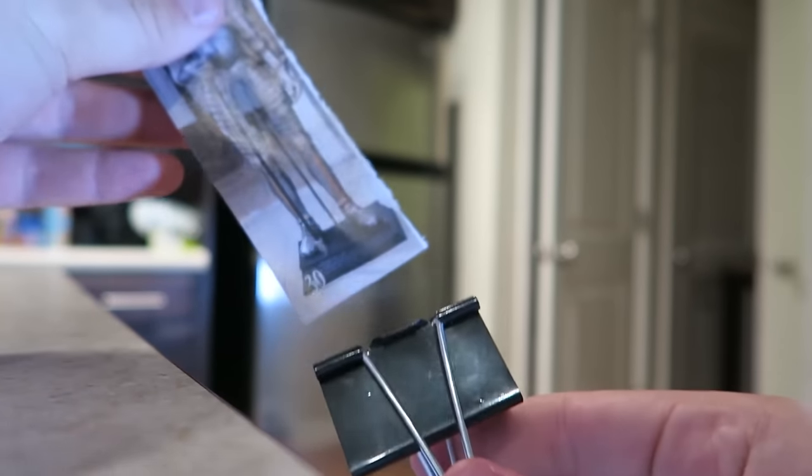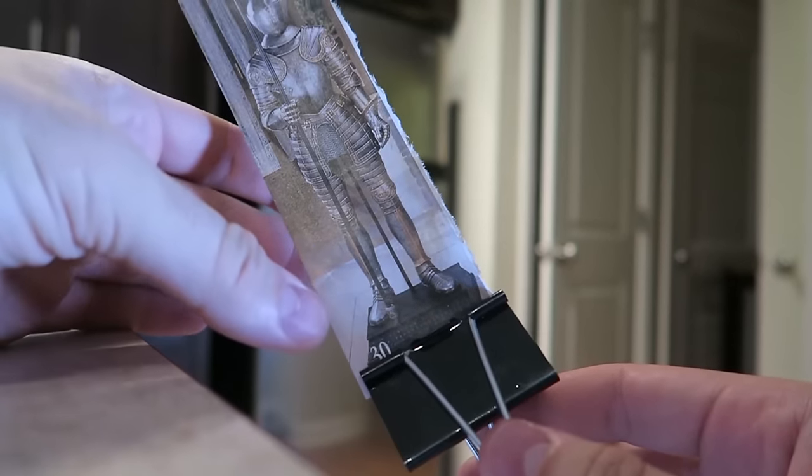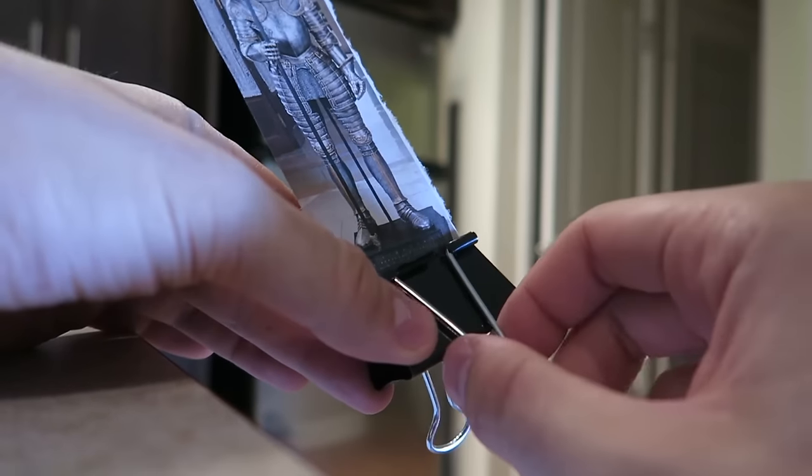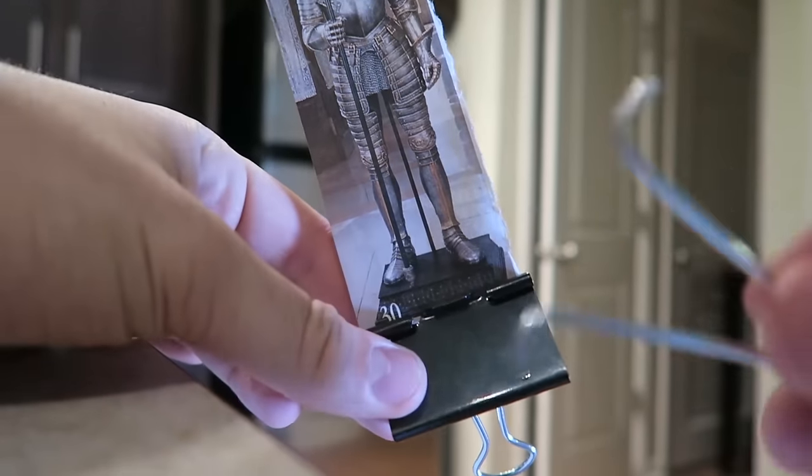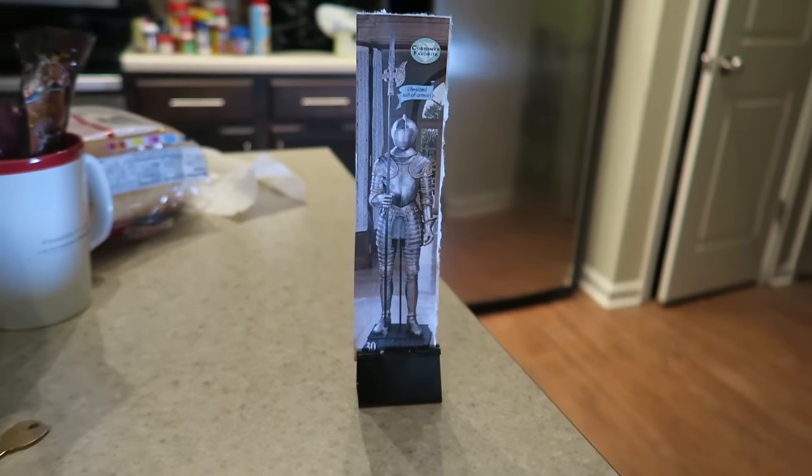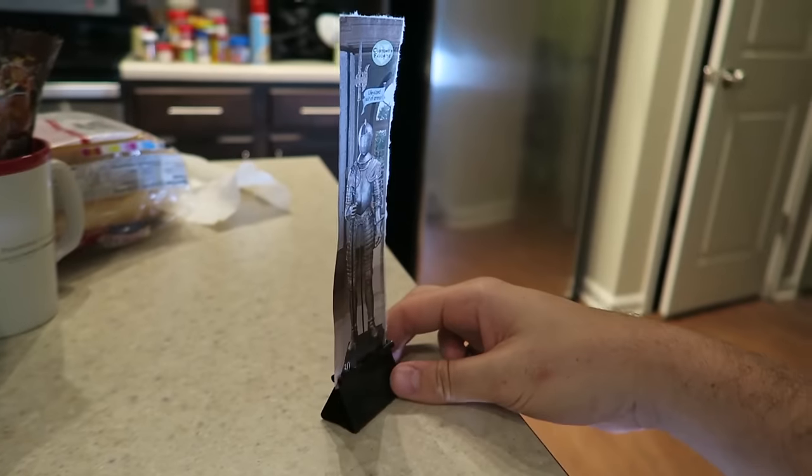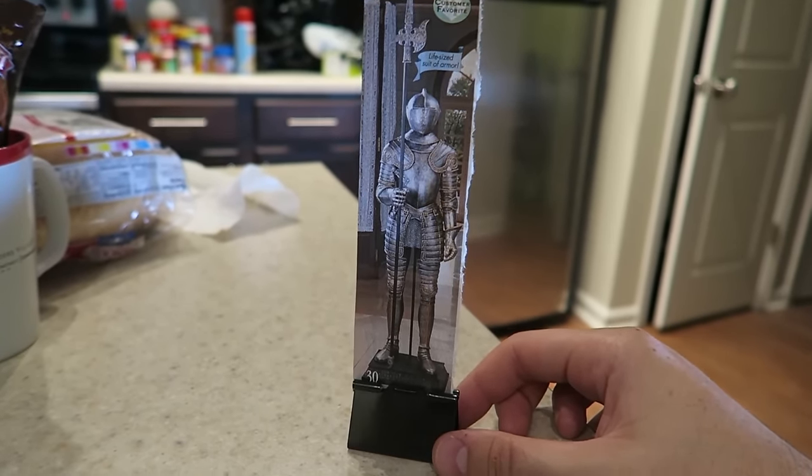For this binder life hack, we're gonna grab a picture, any kind of picture that you want. And we're gonna make a picture stand out of a binder. Hook up a picture like that, and then take out these little things. Now you have a very cool picture stand, look at this. And that will hold any kind of picture, any kind of size. What do you guys think?